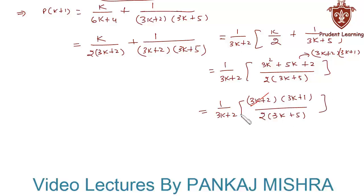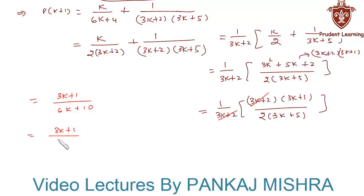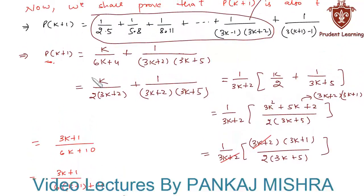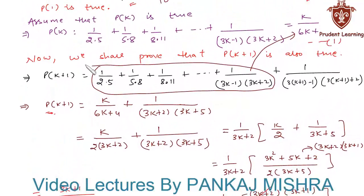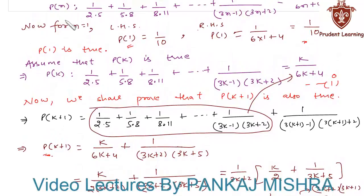We cancel (3k+2) from numerator and denominator, leaving 3(k+1) in the numerator and 2(3k+5) = 6k+10 in the denominator. This can be written as (k+1)/(6(k+1)+4), which is exactly the form of P(k+1). Therefore P(k+1) is true whenever P(k) is true. Hence, by the principle of mathematical induction, P(n) is true for all natural numbers n.